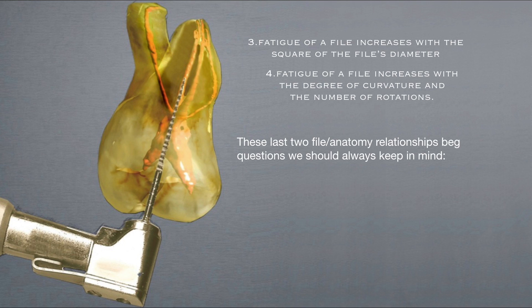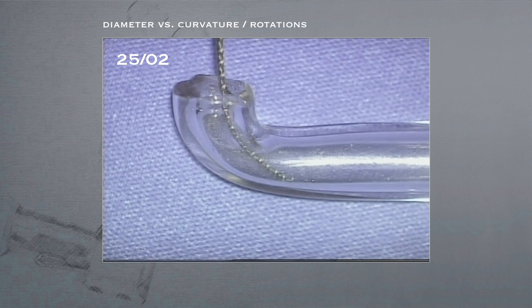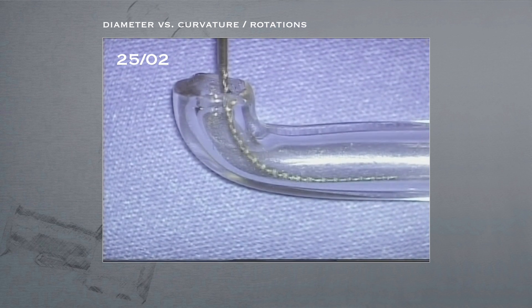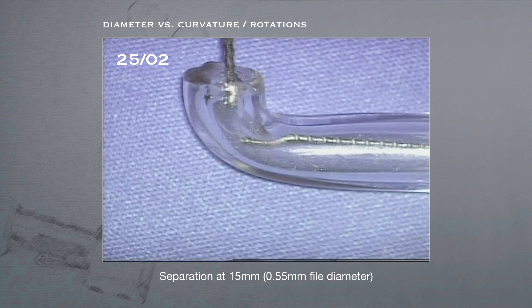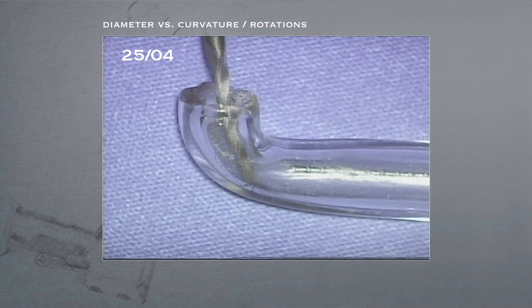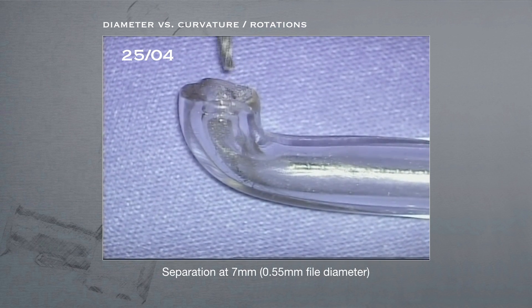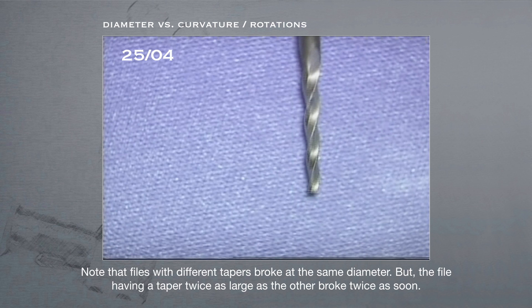These last two file anatomy relationships beg questions we should always keep in mind. How large can a file be before it risks separation? How is the degree of curvature impacting the file? And how is the number of rotations impacting the file? A 2502 file inserted into a glass elbow with a 90 degree curvature while rotating, separated at 15mm from its tip, where it had a .55mm diameter. Using the same methodology, a 2504 was inserted, only to have it separate at 7mm from the tip, where it also had a .55mm diameter. Note that the files with different tapers broke at the same diameter, but the file having a taper twice as large as the other broke twice as soon.